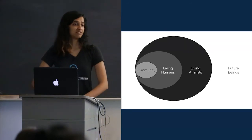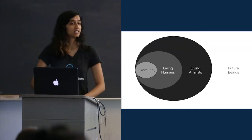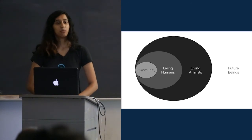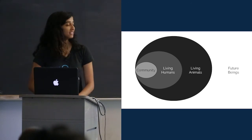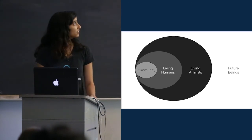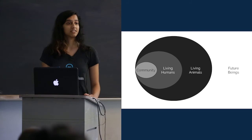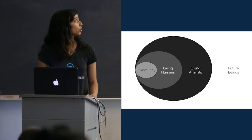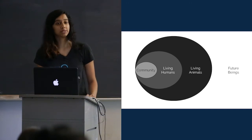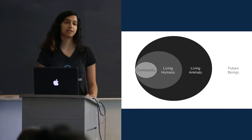And this is why most effective altruists think that global poverty is such a pressing cause. Because when you let all of humanity into your bubble, when you let all of humanity into the circle of people that you're caring for, a lot of the concerns that are very local to us, while they're very real, kind of become overwhelmed by the sheer numbers of people that are outside of our immediate community.